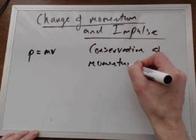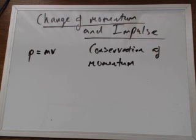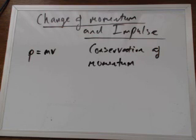The conservation of momentum is such that the momentum of the system is conserved unless acted on by external forces — basically, the momentum of a closed system is conserved. But the momentum of a particular particle itself can in fact change, as long as the total momentum of the system doesn't change.